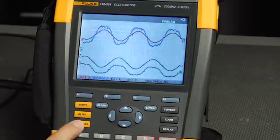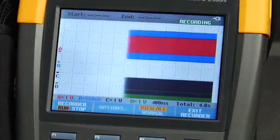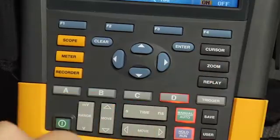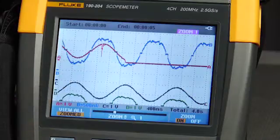Use scope record mode with deep memory to capture inrush currents or automation startup sequences. Scope record mode captures signal transitions with high resolution and accuracy you can count on.